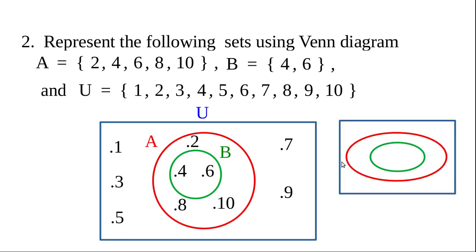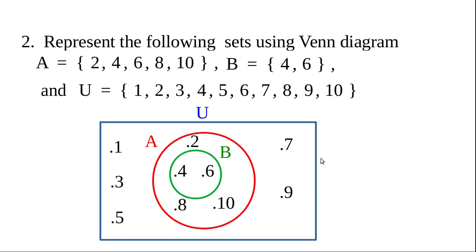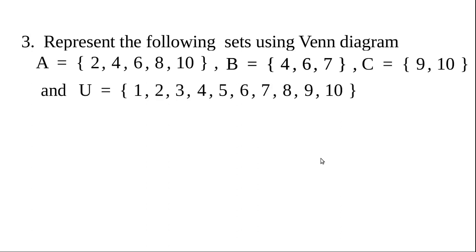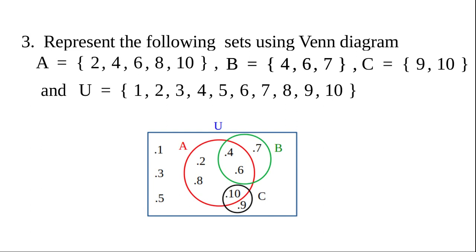Third example — do it yourself: A = {4, 6, 8, 10}, B = {4, 6, 7}, C = {8, 10}, U = {1, 2, ..., 10}. Pause the video and draw the Venn diagram yourself. The correct answer: 4 and 6 are common to A and B, so draw B overlapping A there. 10 is common to A and C, so draw C overlapping A there. Elements 1, 3, 5 are in U but not in A, B, or C, so write them outside all three sets but inside U.